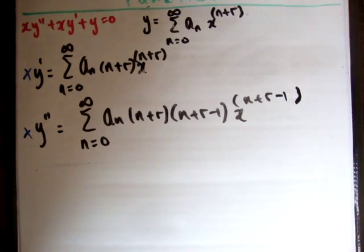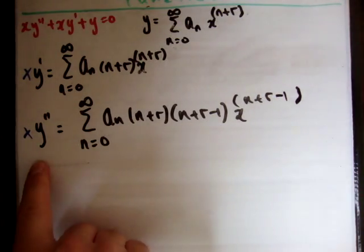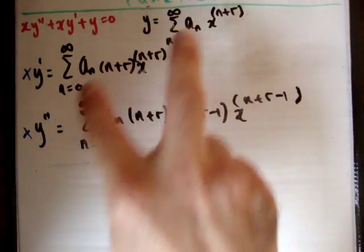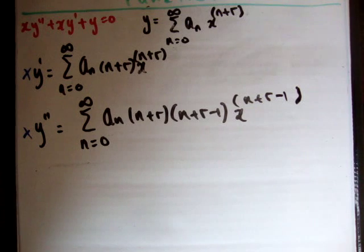Alright, and what we need to do basically is to adjust x y double prime so that it's similar to these and we do that by shifting the indices. Alright, so how do we go about shifting the indices?